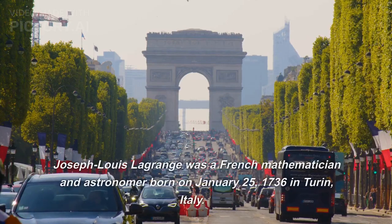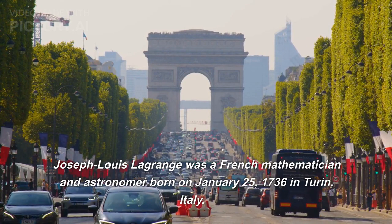Joseph Louis Lagrange was a French mathematician and astronomer born on January 25, 1736 in Turin, Italy.